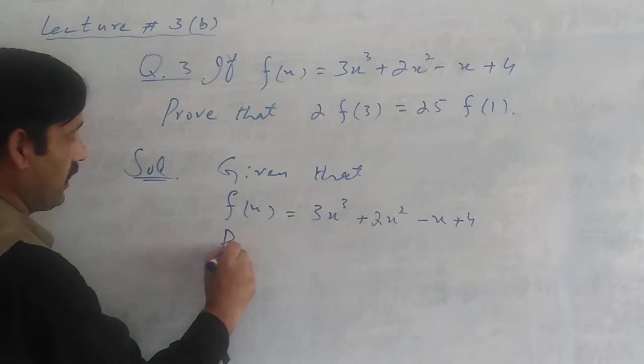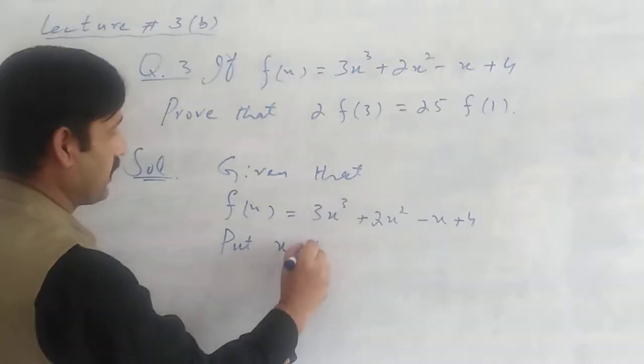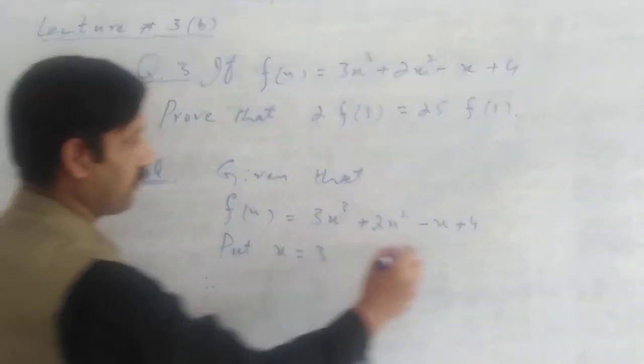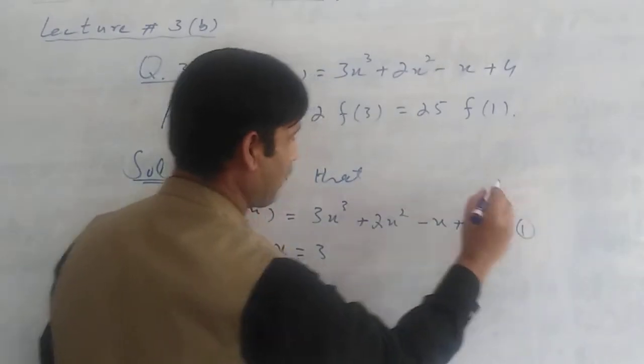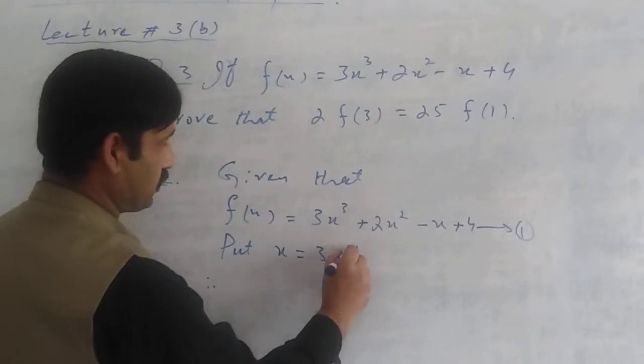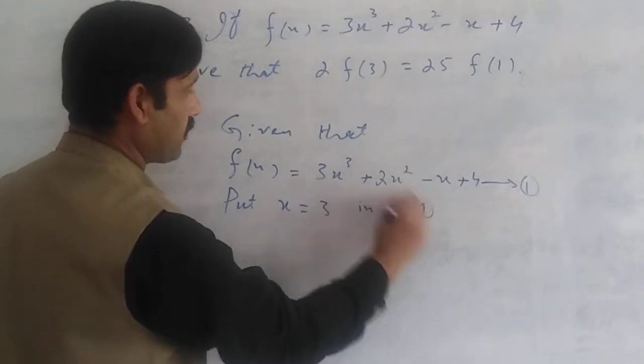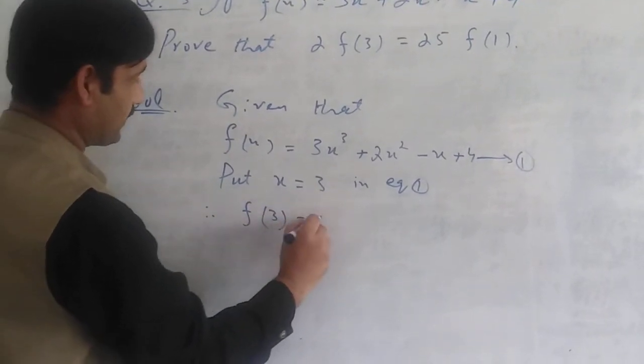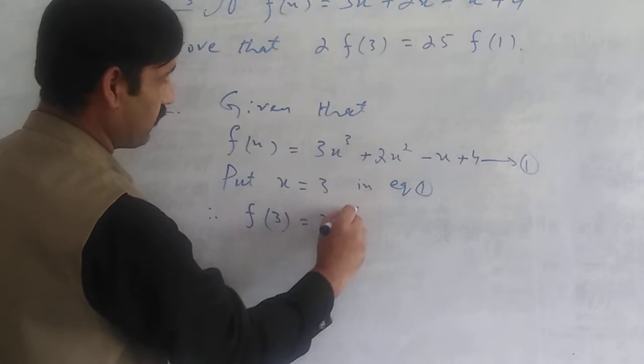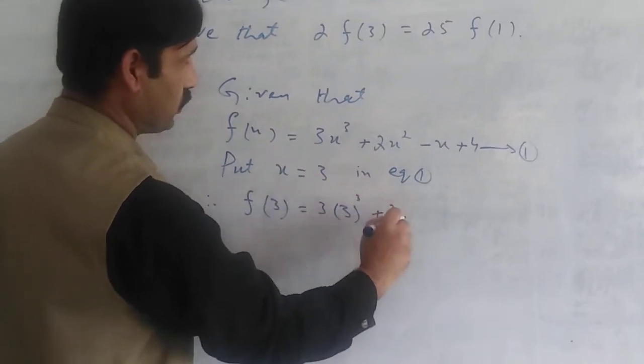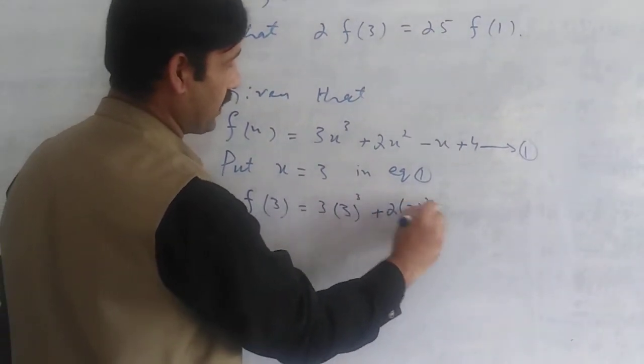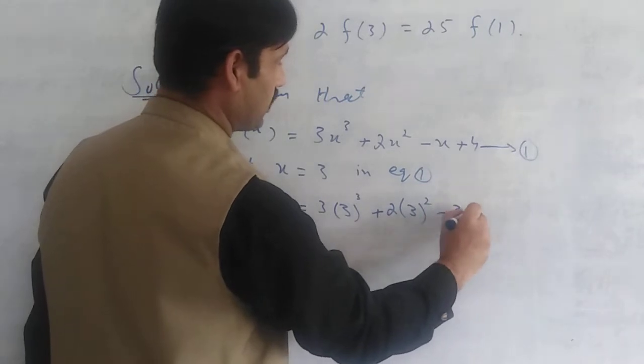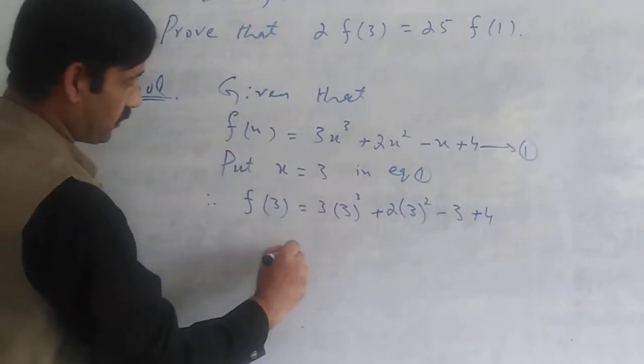f of x is equal to 3x cube plus 2x square minus x plus 4. If we have left side, we can have left side, then we will find the function of x cube. Therefore, this function of equation 1 part. x cube is equal to 3 in equation number 1. Therefore, f of 3, I have to write the function 3x cube plus 2x square.